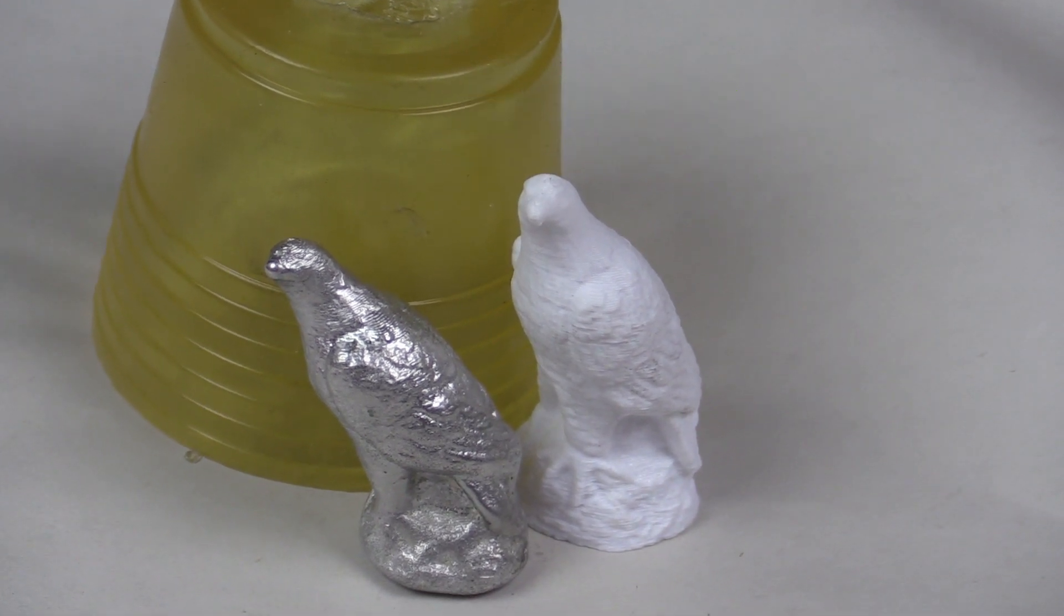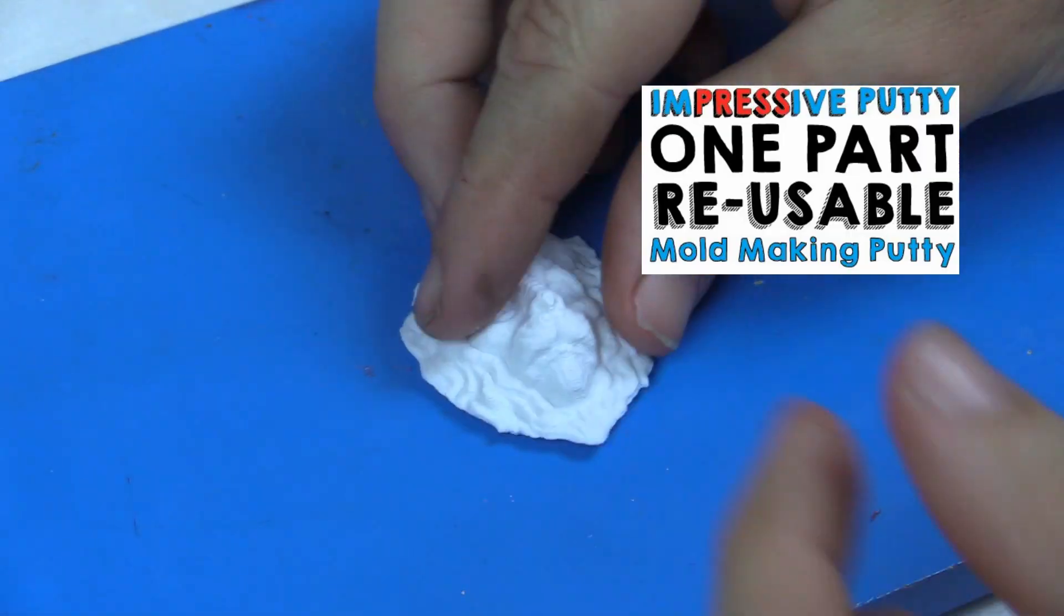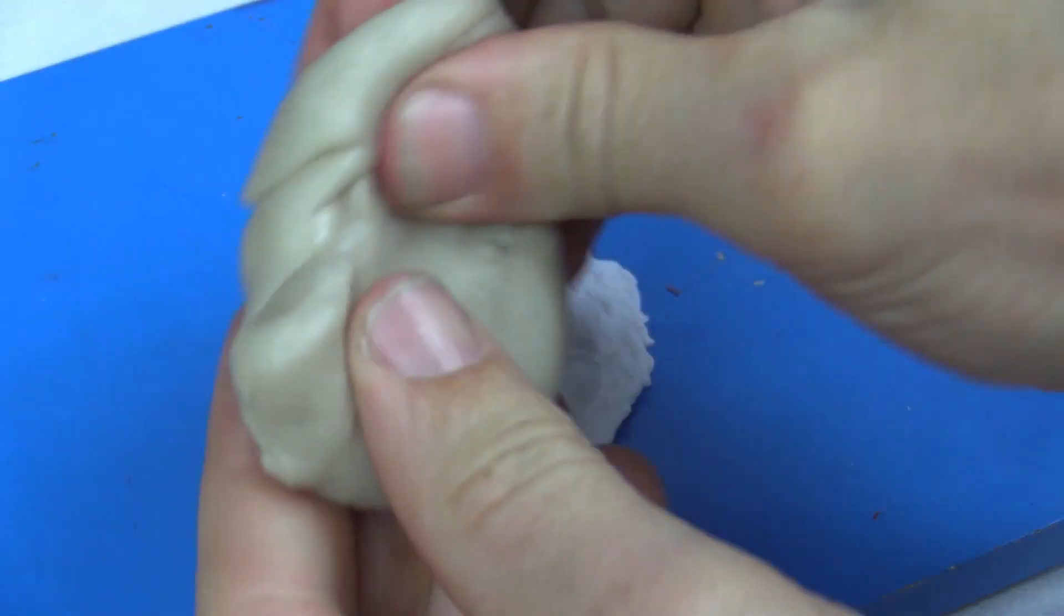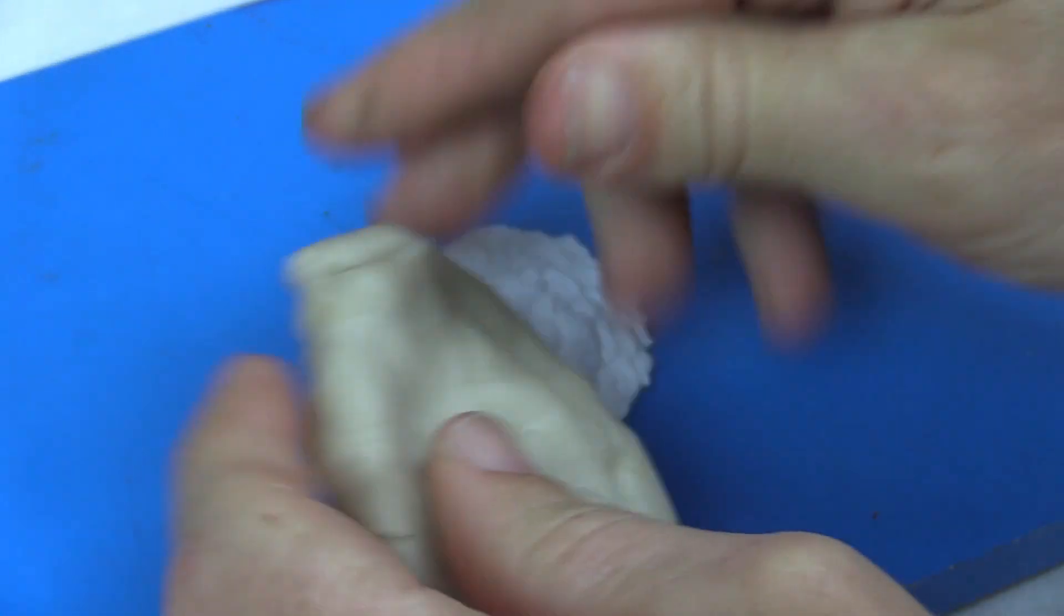In this example, we made the original mold with ComposiMold reusable mold making materials but you can also use the reusable Impressive Putty.